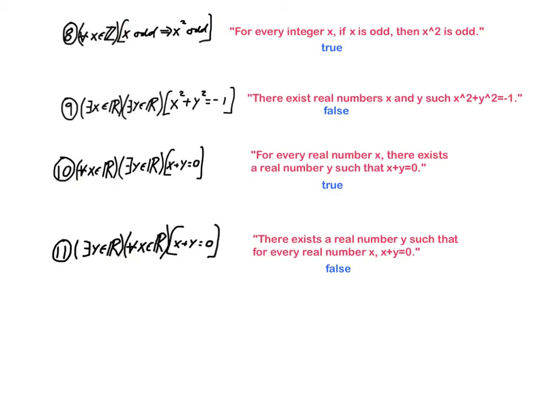All right, for number eight, we'll read this as for every integer x, if x is odd, then x squared is odd. Okay, so remember that's how we say in words p implies q. We either say if p then q or we could say p implies q. I think in this case it's better to say for every integer x, if x is odd, then x squared is odd.